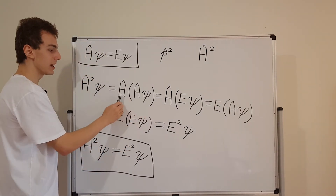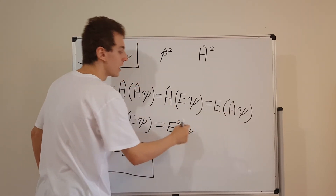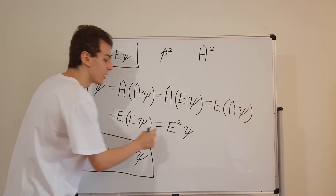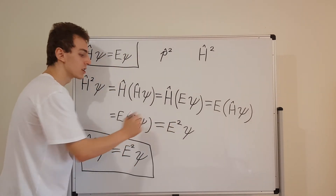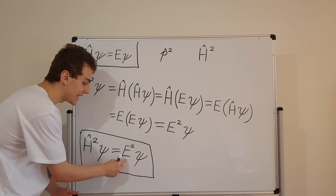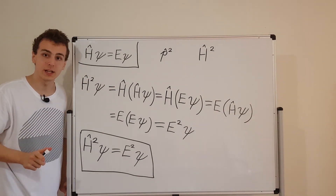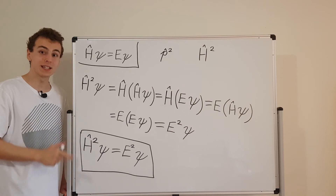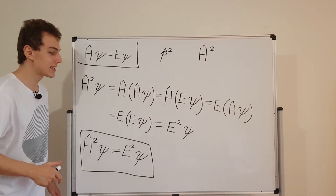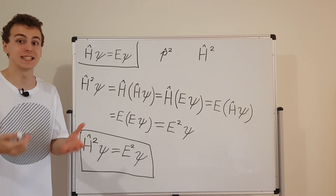We can split this up so that this part is equivalent to E times psi, then swap the order and move the constant out to the front, apply the Hamiltonian operator again, and that gives us another E — two factors of E, which gives us E squared. So acting with the Hamiltonian operator squared is the same as multiplying by E squared. This is what we're going to be using in the later videos, and it's going to be very important in finding the variance of the Hamiltonian. We already have the expectation value of the Hamiltonian — we know it's just E — but we want to find the variance, which will tell us about the spread in stationary states. We'll actually find that the variance is zero and there's no spread.